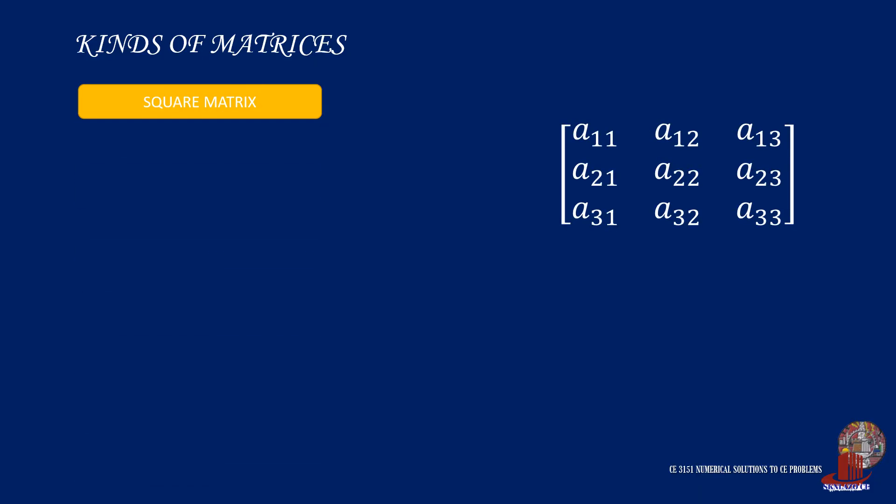When discussing size and appearance, matrices can be classified as follows. First, the square matrix. This type of matrix has the same number for both its rows and columns.